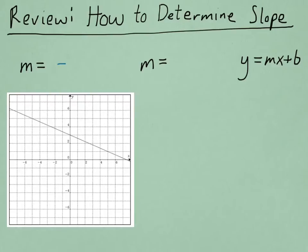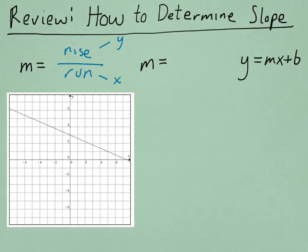Graphically, the slope is rise over run. Rise being how much the line goes up in the y direction, and the run being how much it moves in the x direction. So from a graph like this, we'll choose some easy points to read from the grid lines, such as this one and this one.